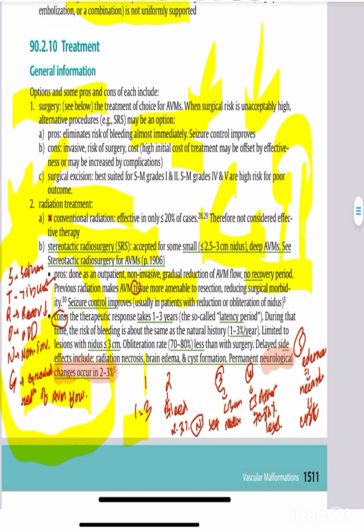However, there are consequences: one to three years for obliteration; during the latency period, there's continued risk of bleeding at the natural history rate of about 3% per year; bleeding risk is 2-3% per year during treatment; best results are for lesions less than 3cm; and obliteration rates of 70-80% are lower than surgery.